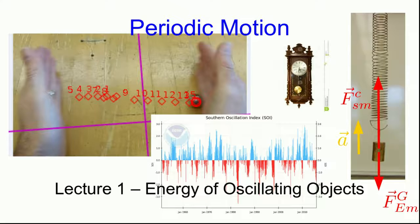Hello and welcome to lecture one of Periodic Motion in Phys 1104. In this lecture we're going to start by looking at what we mean by periodic motion and then start to look at some of the properties of periodic motion by thinking about the energy of oscillating objects.